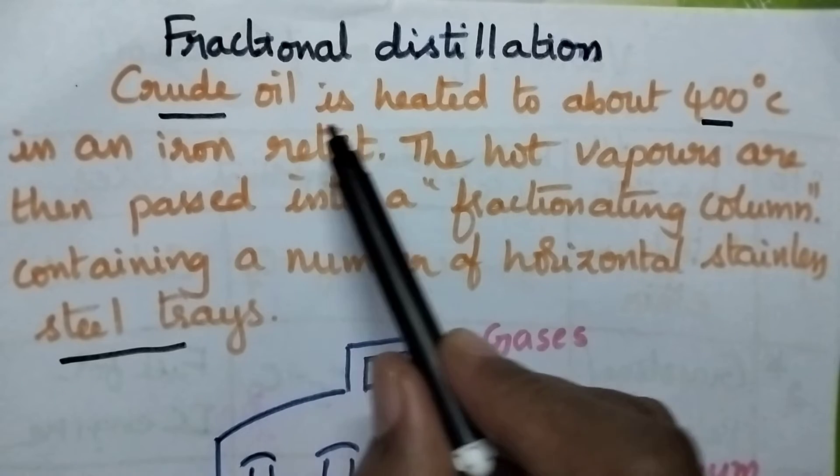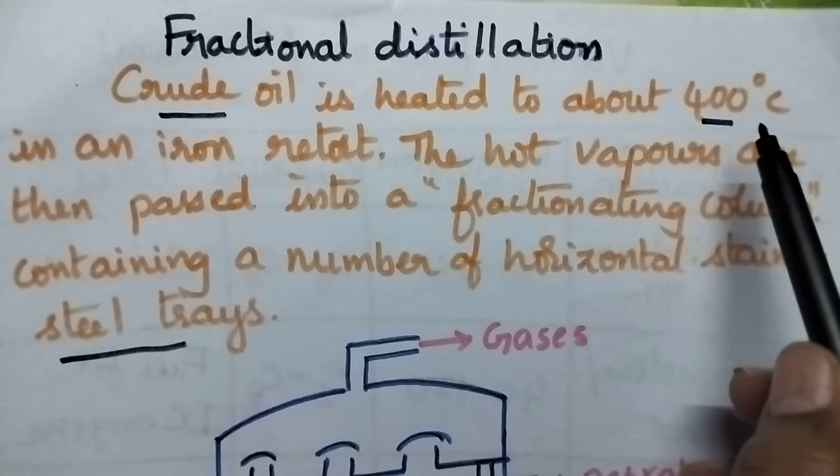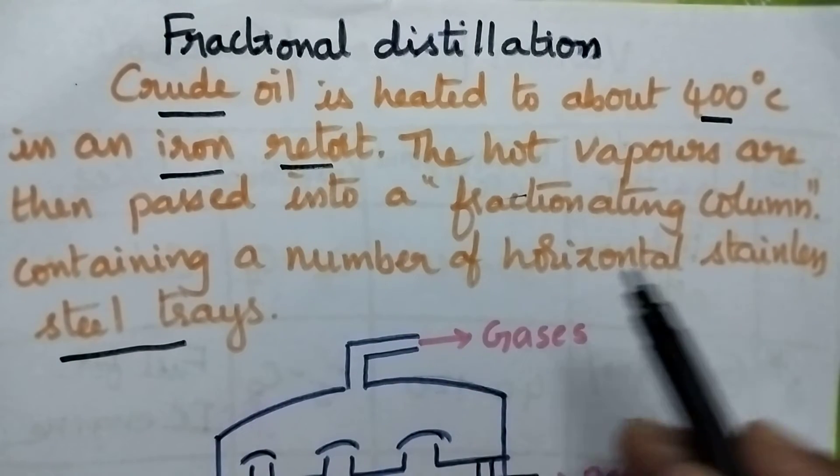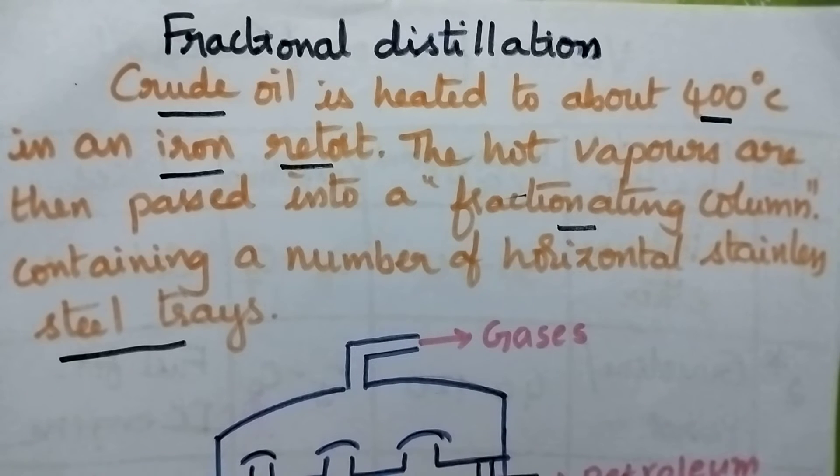In this process, initially the crude oil is heated to very high temperature, that is around 425 degrees centigrade, in an iron retort. The hot vapors are then passed through the fractionating column which consists of a number of horizontal stainless steel trays.